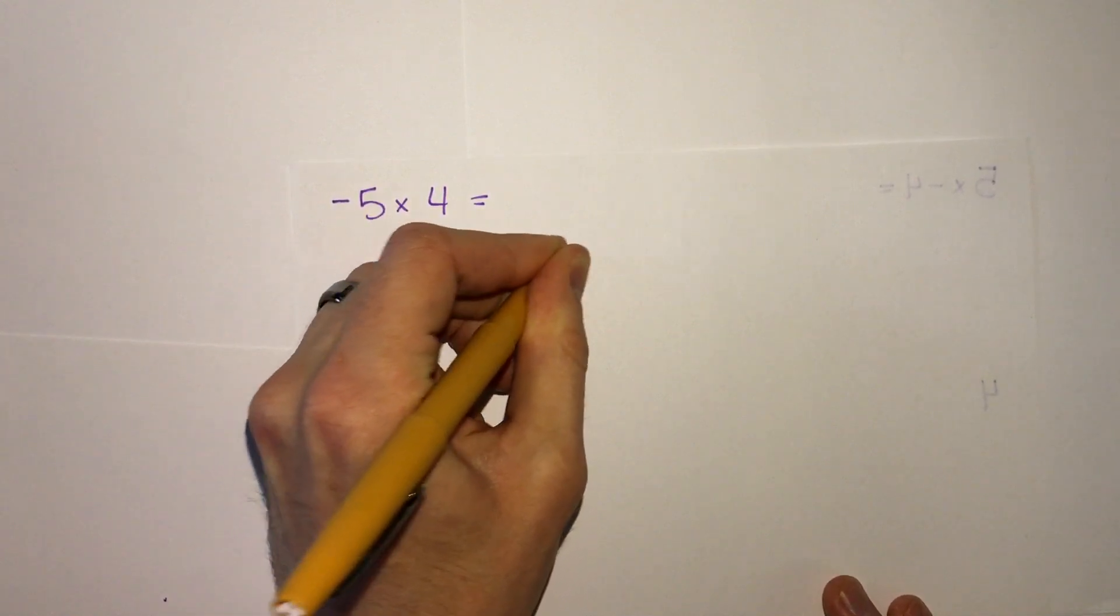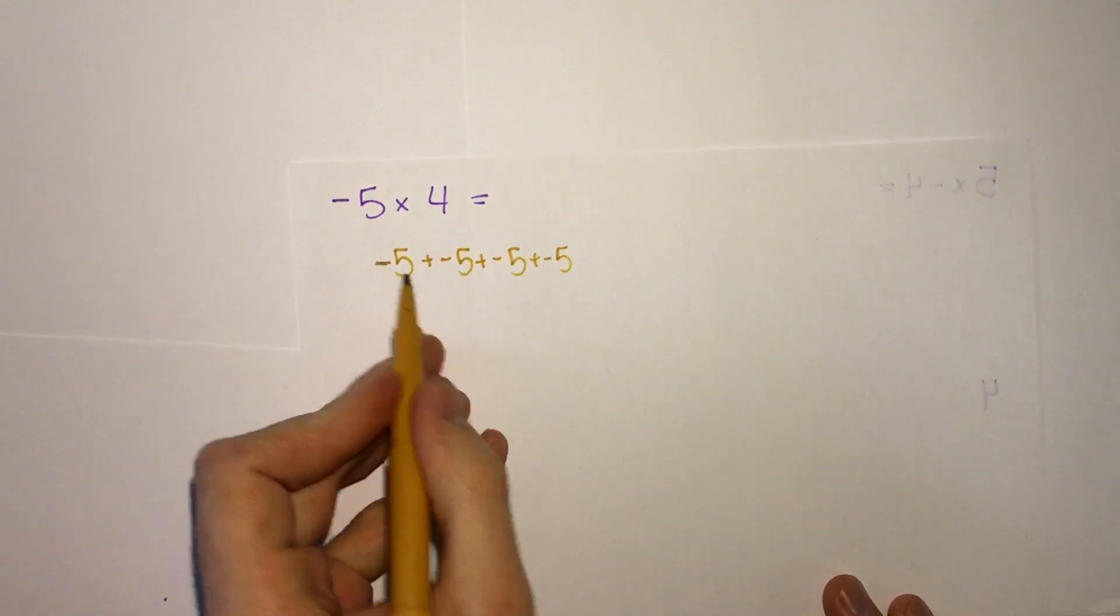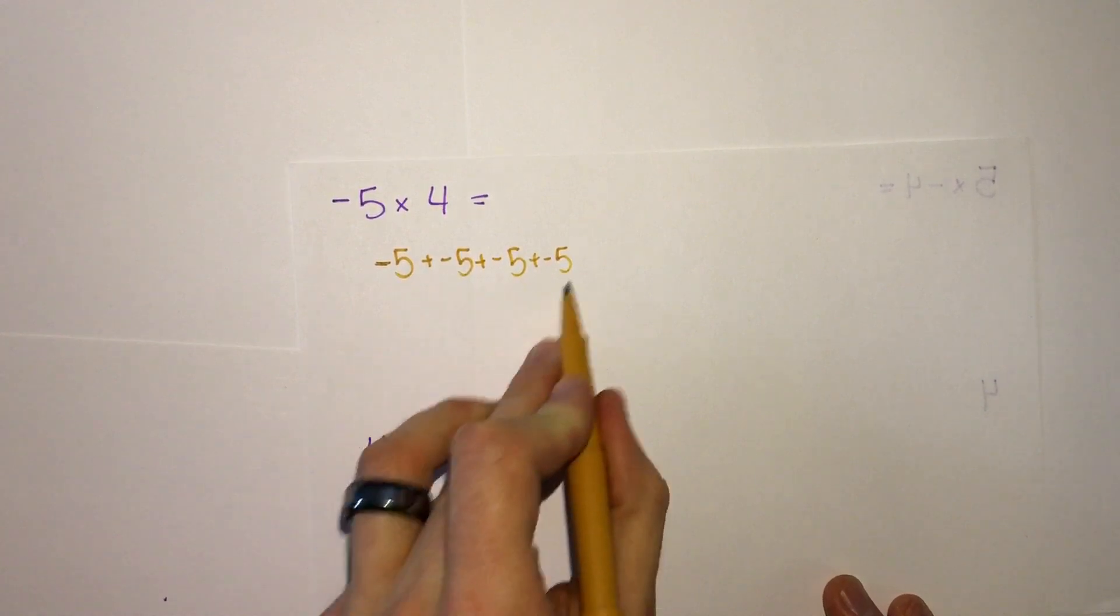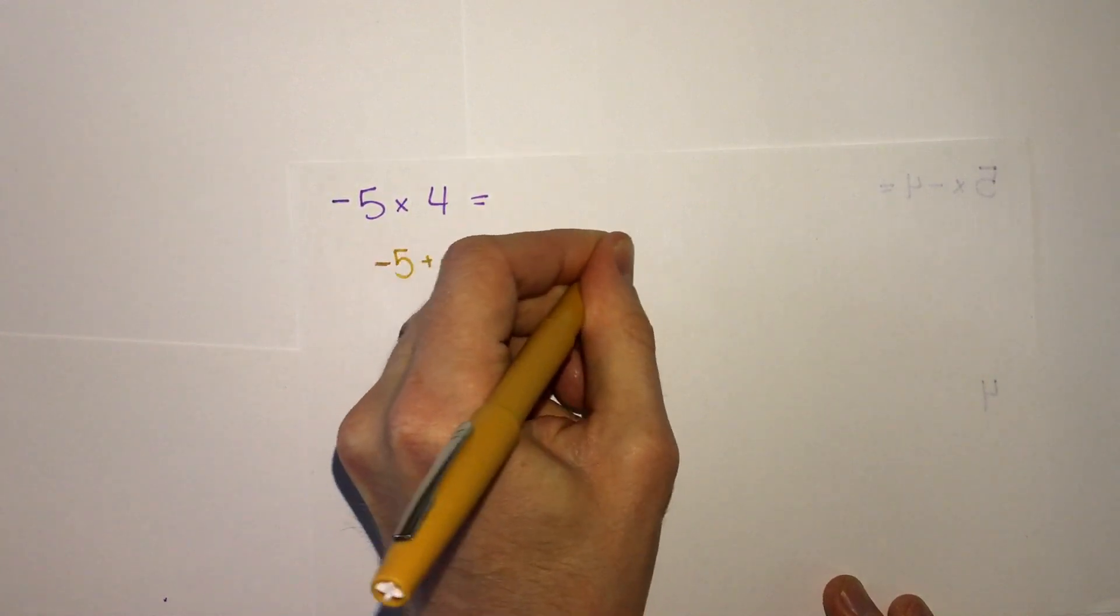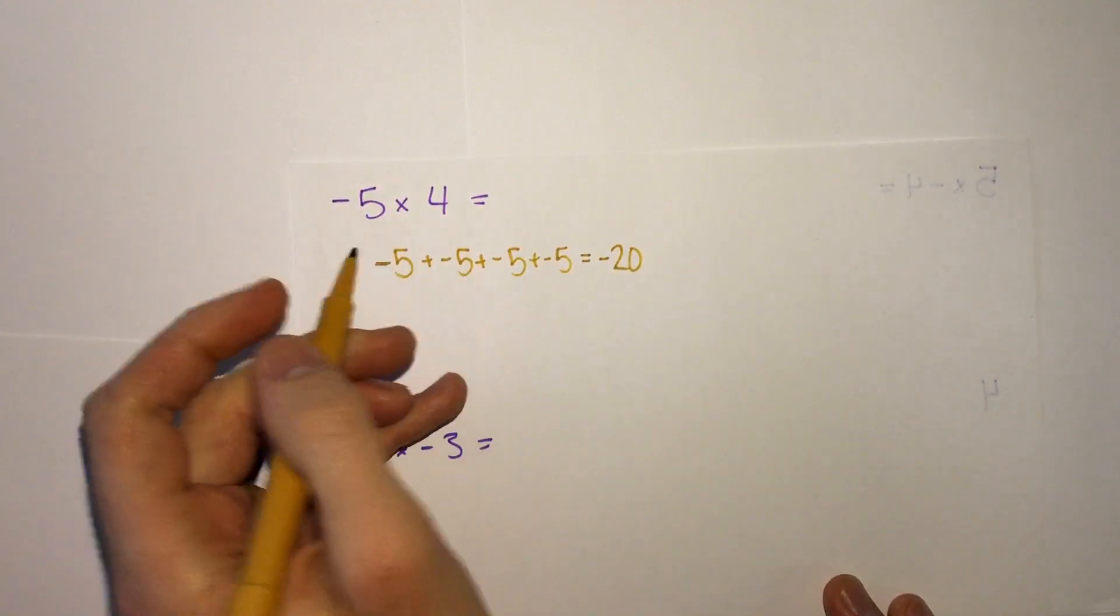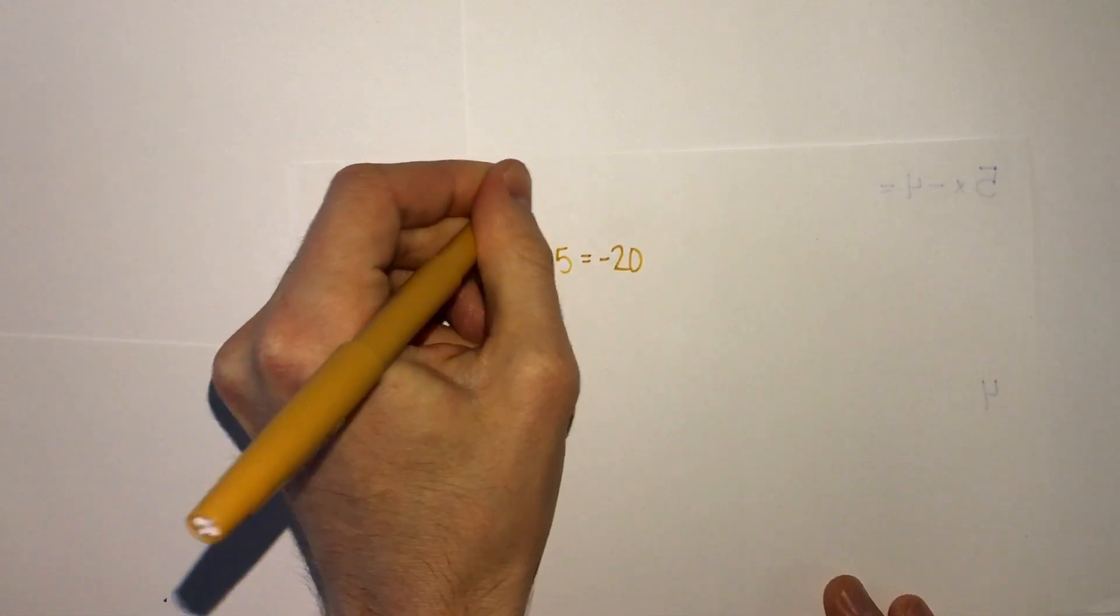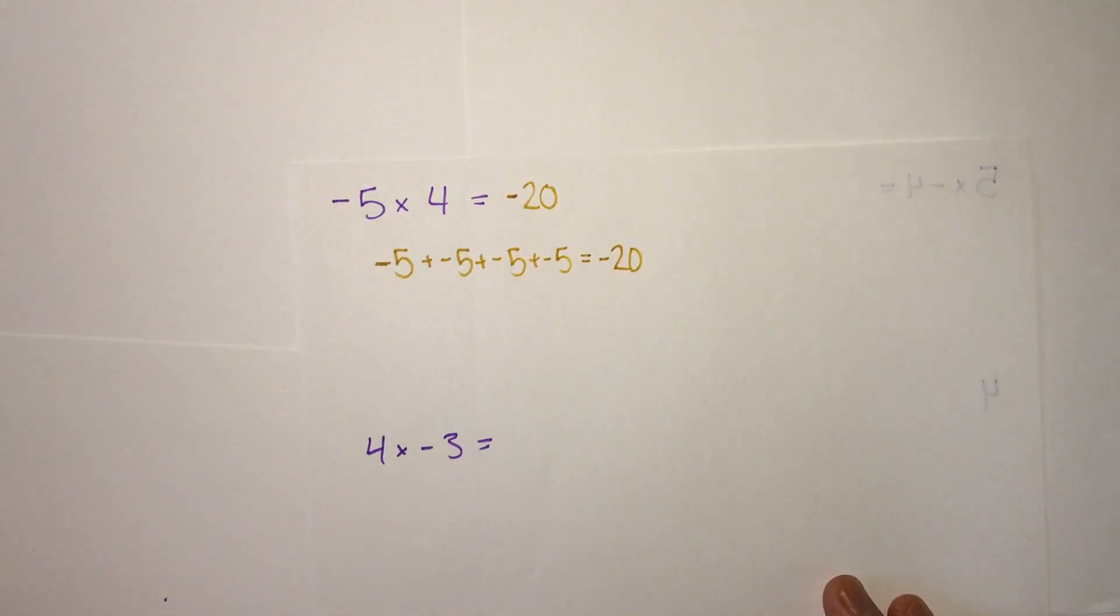If we add negative 5 four times, we get negative 10, negative 15, negative 20. You'll notice 5 times 4 is 20. The only difference here is our answer is negative.